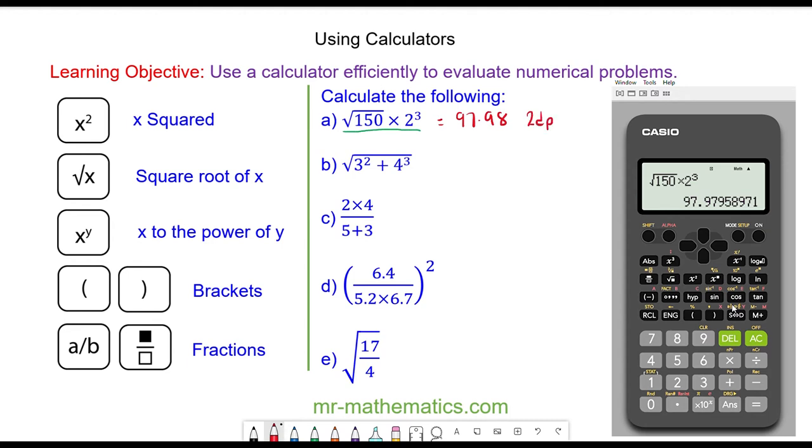For question b we have the square root button, we enter 3 squared, add 4 to the power of 3, 4 cubed, and again the equals button. This again is in surd form, we press the SD button to make it into a decimal and we have 8.54.